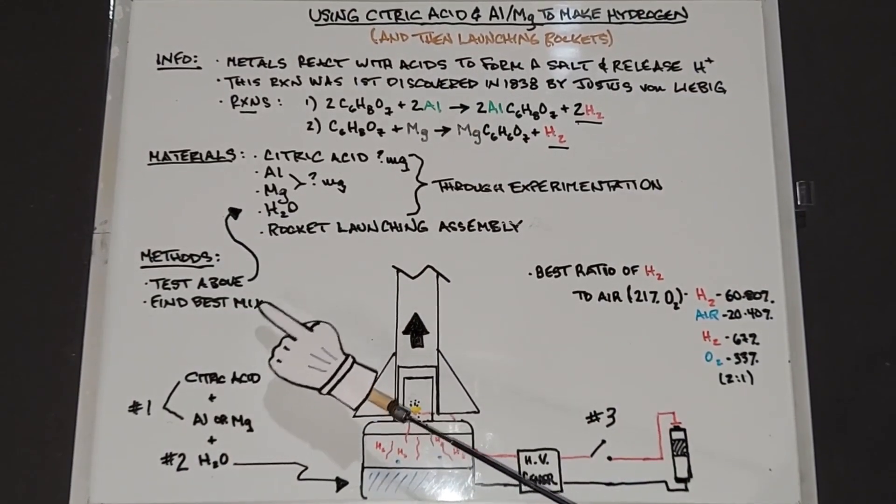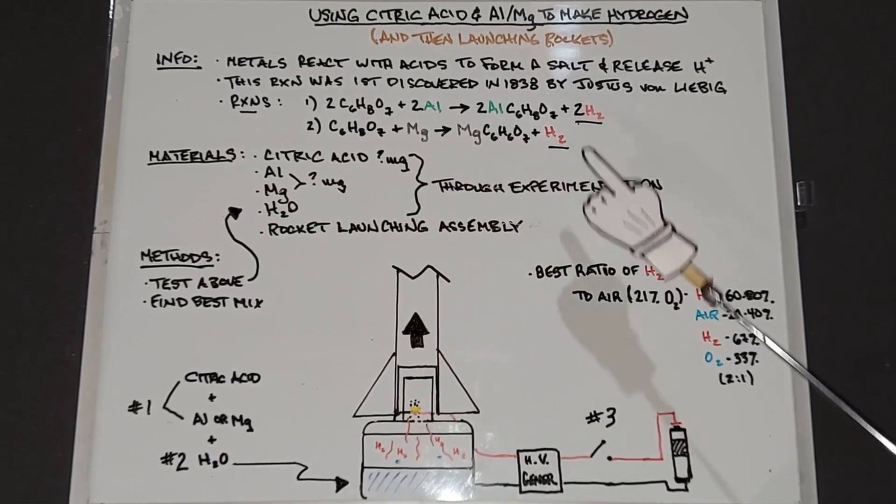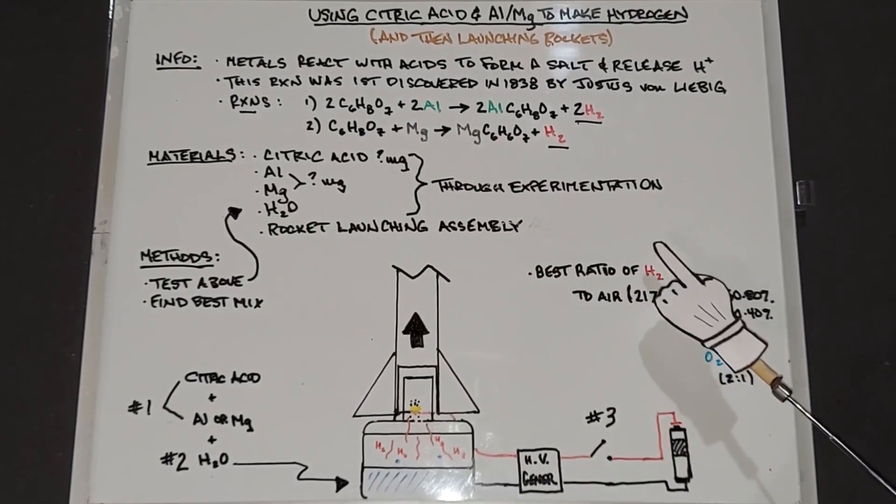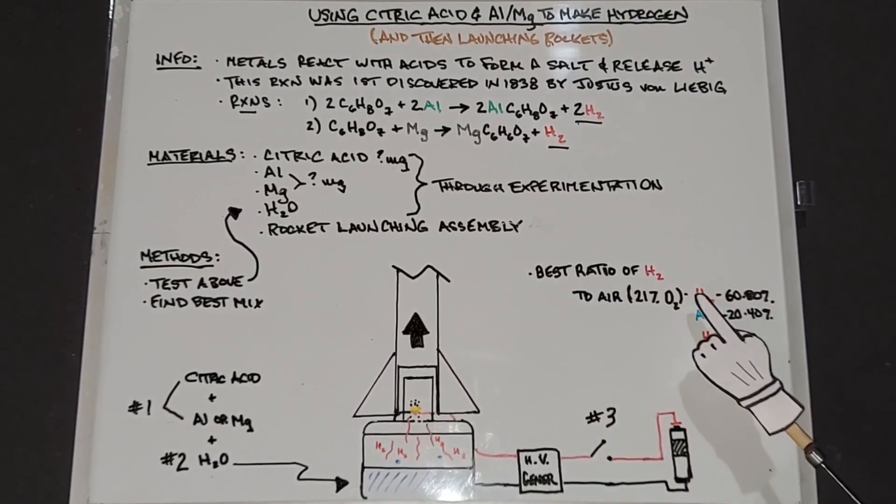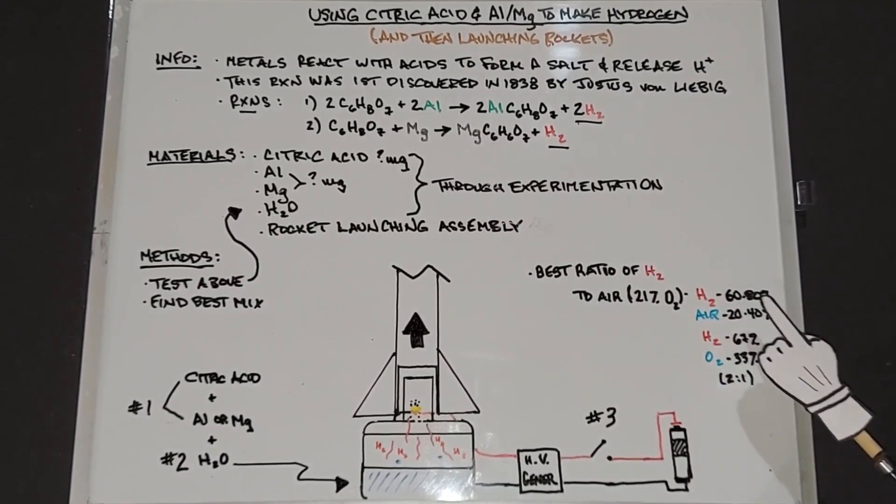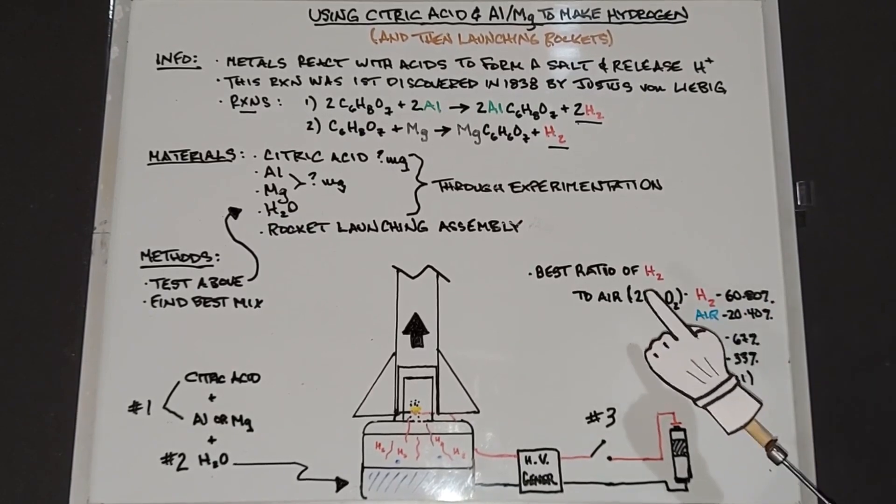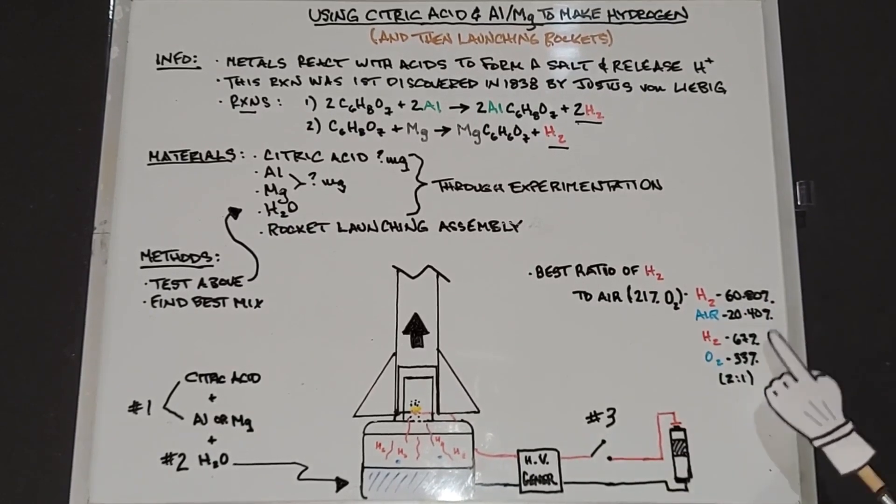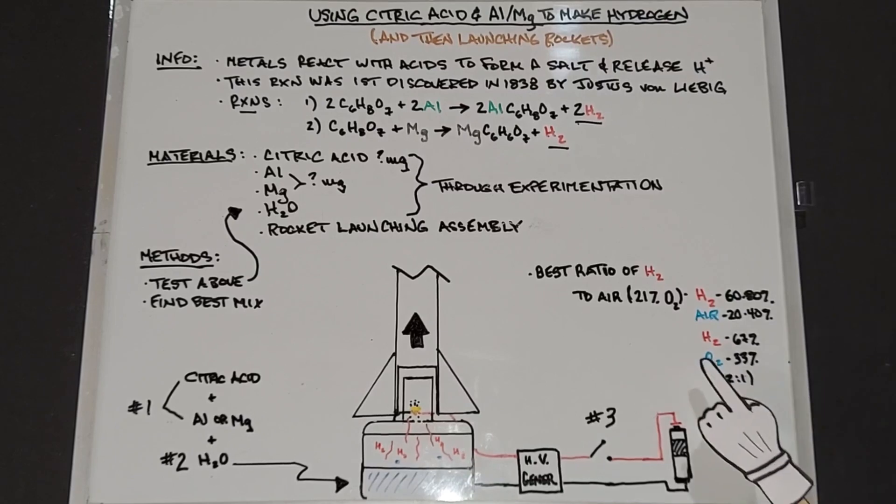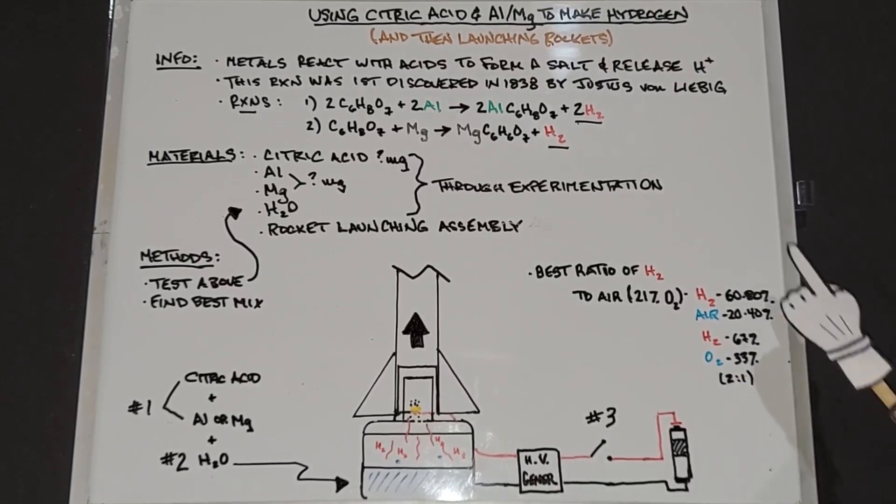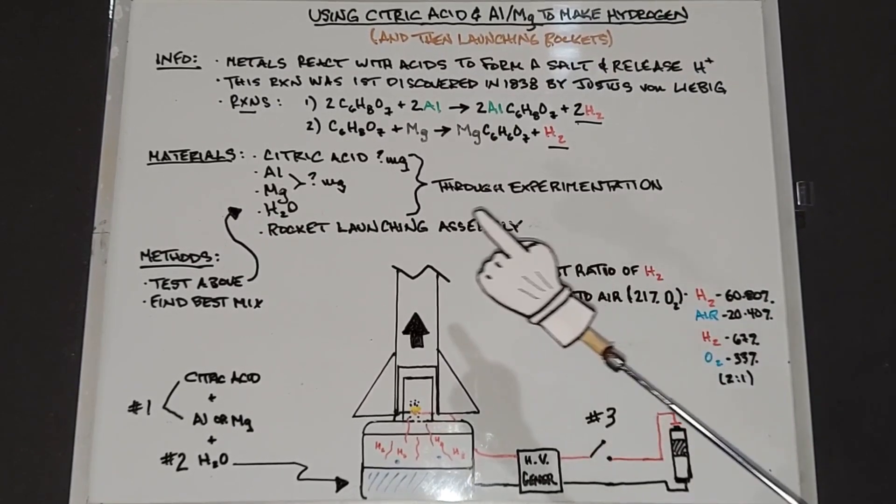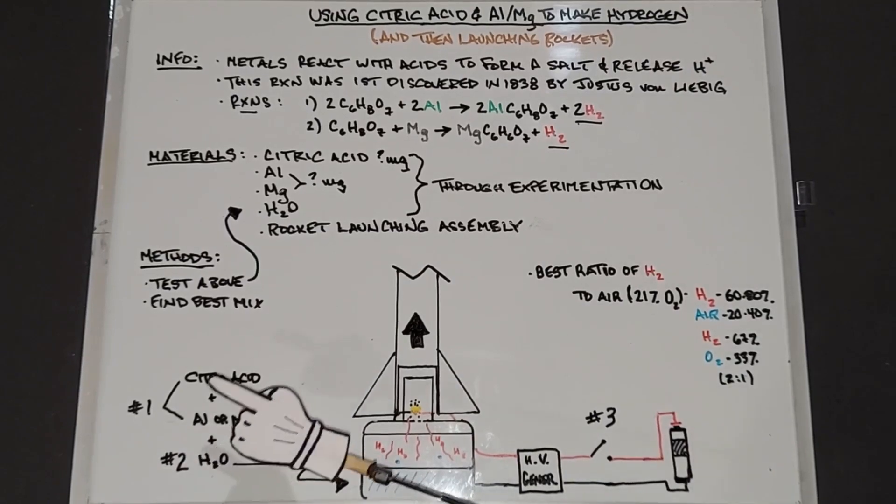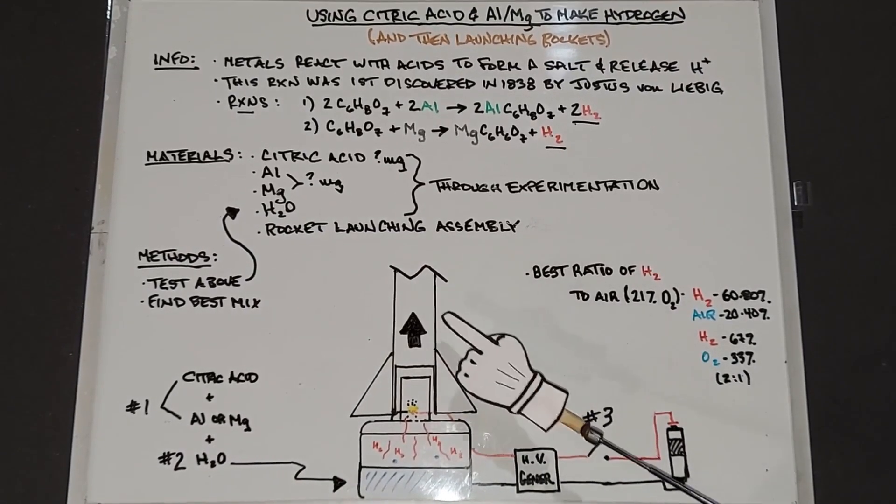The best ratio of hydrogen to air, which is 21% oxygen, is hydrogen between 60 and 80% and air between 20 and 40%. If you're talking pure O2, then you have hydrogen at 67% and oxygen at 33%, which is a two-to-one ratio. For the rocket launching assembly, I'm going to start with a container, probably a jar. I know glass isn't the best, but I'm hoping to keep the total pressure down.